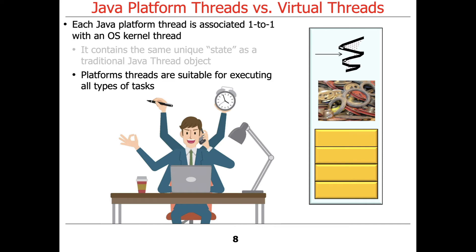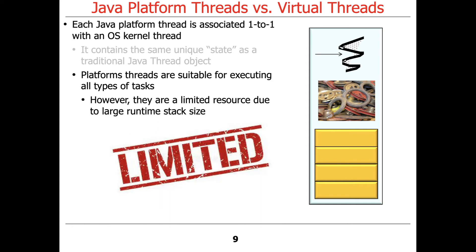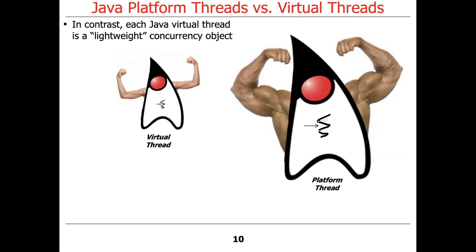Platform threads are suitable for executing all kinds of tasks — everything you can do with a traditional Java thread you can also do with a platform thread. However, because they have their own stack and they use operating system resources, there's a limit on how many platform threads you can have. Each stack is typically, by default, one megabyte of virtual memory, so if you have 50,000 threads, that's a lot of memory.